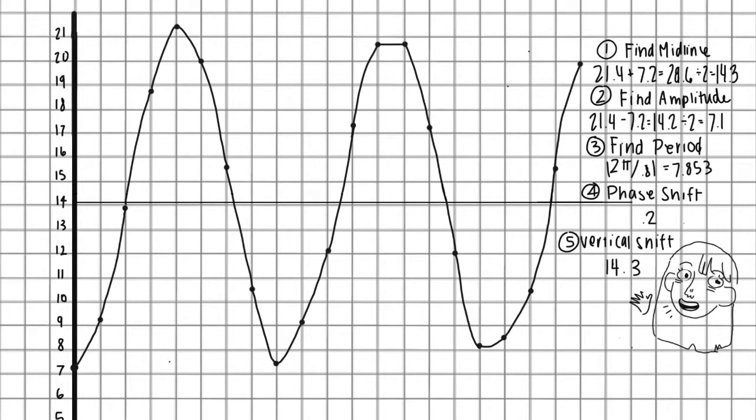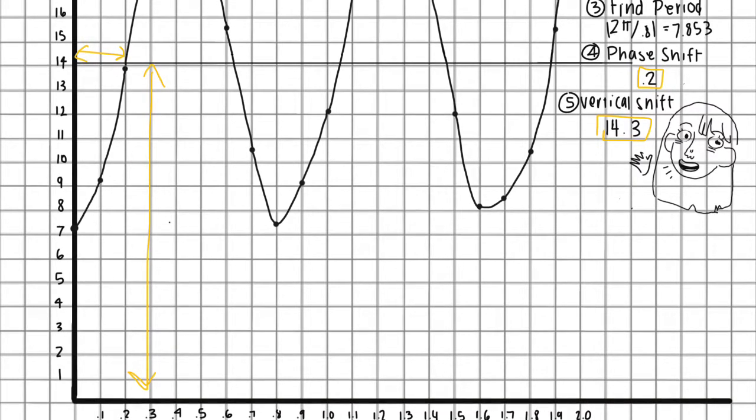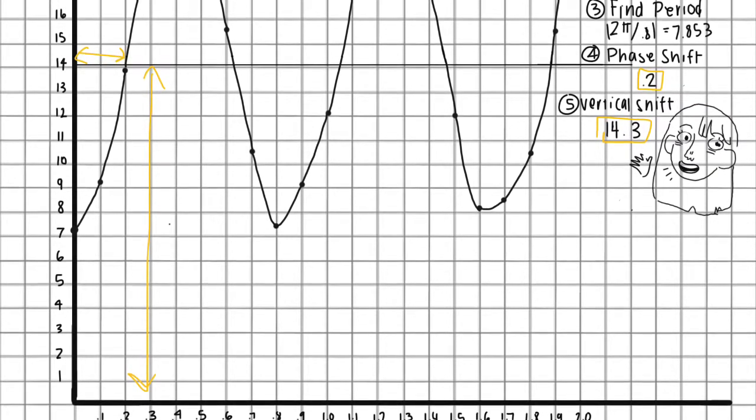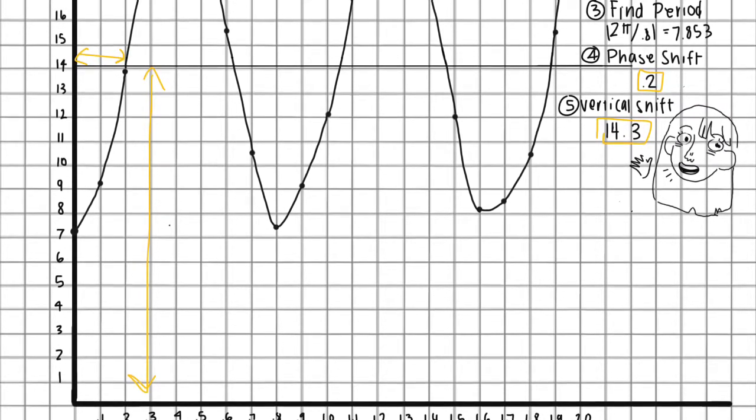Now we have to define the vertical shift. The vertical shift is how many units the function has moved up or down from the original parent function. In this case, the midline, which is 14.3, will be the vertical shift since the original midline will be at 0.